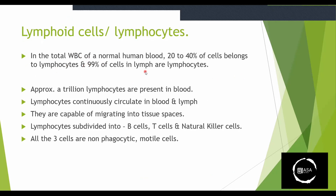Total white blood cells: for normal human blood, 20–40% of cells are lymphocytes. Lymph is lymphatic fluid, and lymphoid cells are involved in the immune response. Lymphocytes are continuously circulated in our blood and are able to migrate into tissue spaces.